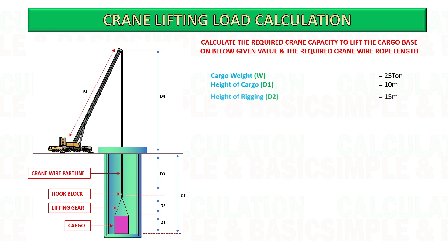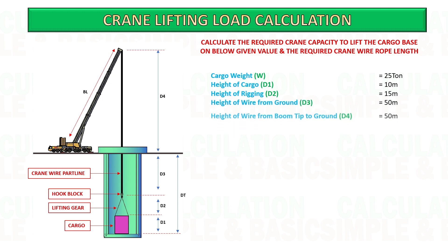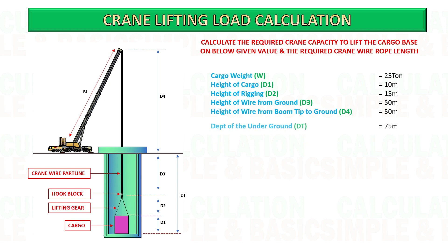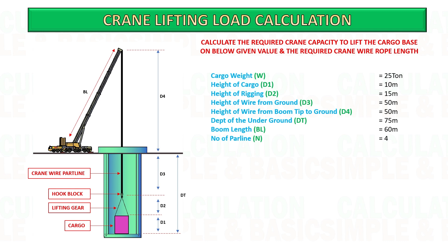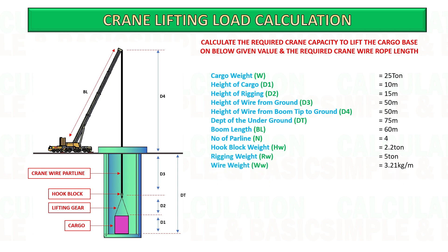In this example we need to hoist the cargo 75 meters deep from the ground level, and the weight of the cargo is 25 tons. We are using a 2.2-ton hook block with four numbers of part line, and rigging weight is 5 tons. The wire rope diameter is 28 millimeters and the weight of wire per meter is 3.21 kilograms. Other details are mentioned as follows.